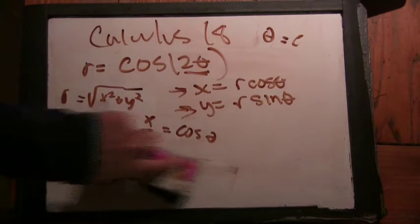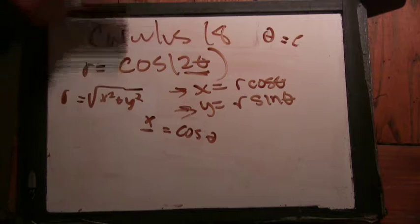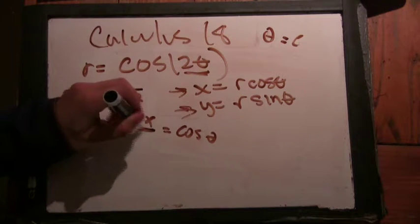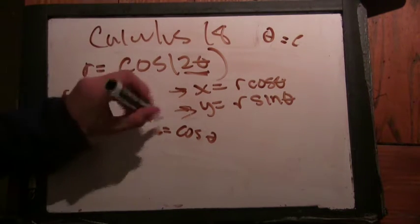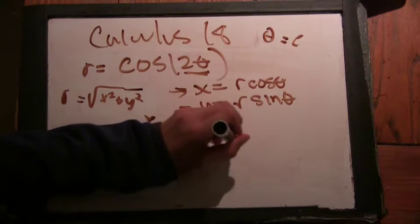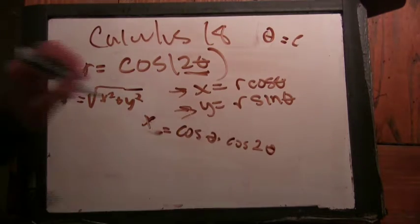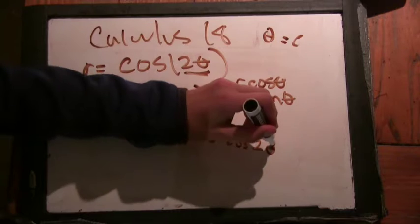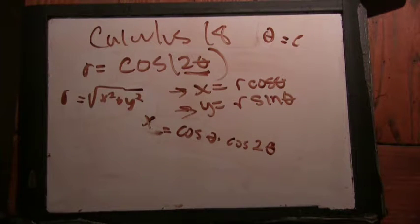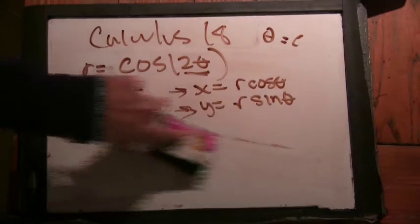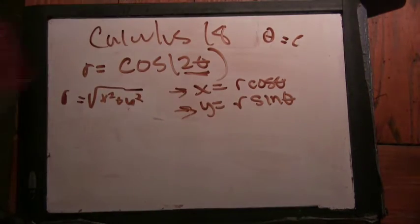All right. So maybe x equals cos(θ) times cos(2θ). But that's not really that helpful. Yeah. Do you feel like that's simplifying or making things more complicated? It's not really simplifying. Yeah. So you want to figure out how to simplify a little bit here.